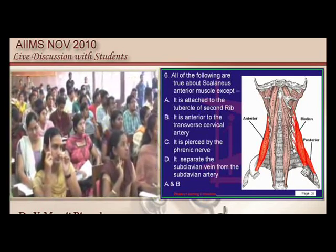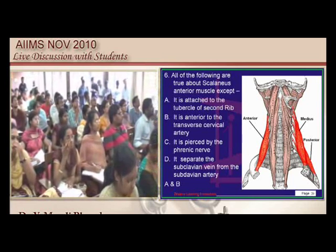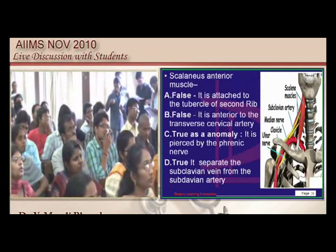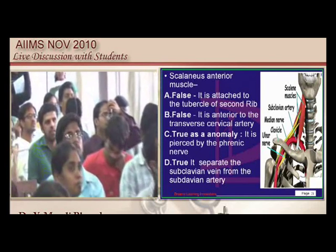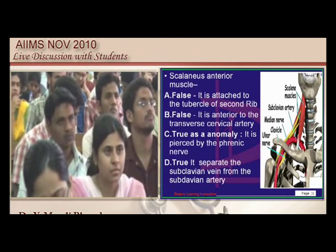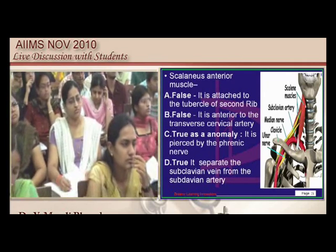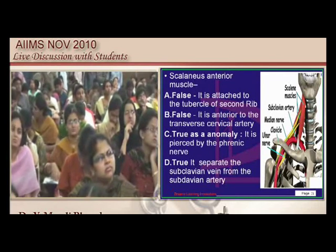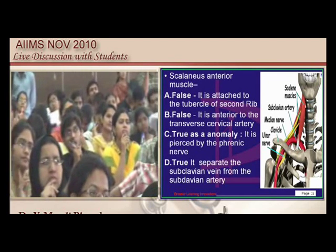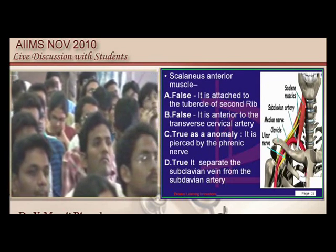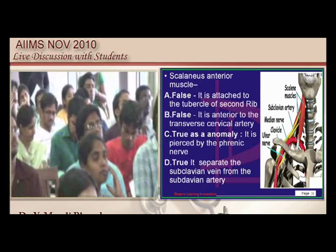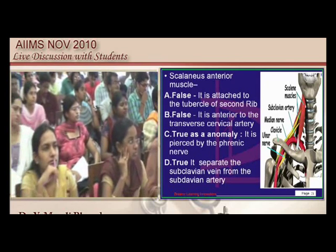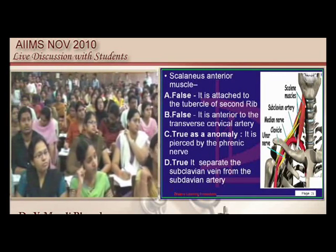With regard to the scalenus anterior muscle, it basically separates the subclavian artery from the subclavian vein — that is a true statement. Coming to the attachment of scalenus anterior, it is not the second rib; rather it is typically attached starting from the third, fourth and fifth ribs. Also, it is the transverse cervical artery which is anterior to the scalenus anterior muscle. So I find two statements false.